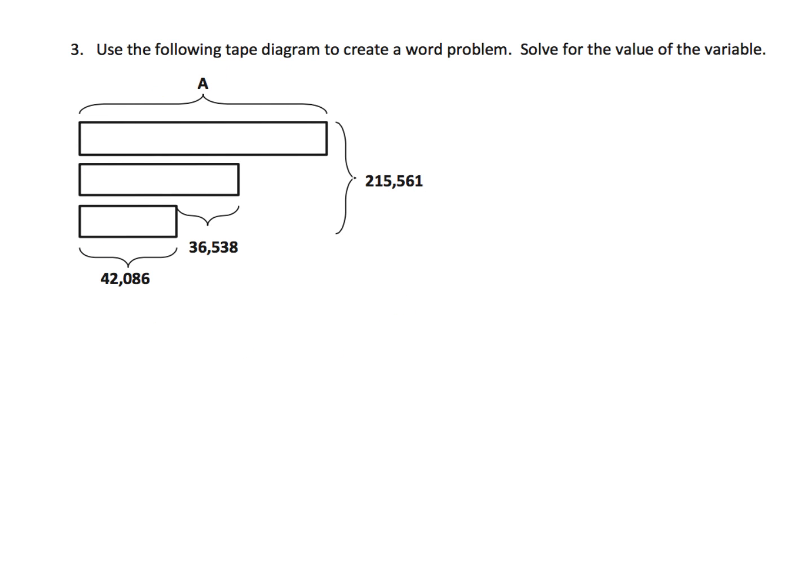Here we're given even less information. We're simply given a tape diagram and are told to come up with a word problem. And we are told that we want to figure out this length right here. That's our variable. So I'm going to say, let's do A, B, and C as our topics. And I'm going to say that A stands for apples. B stands for bananas. And C stands for cherries. And let's say we are a shipping company and we are delivering pounds of fruit.